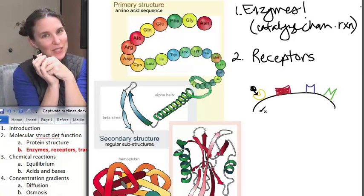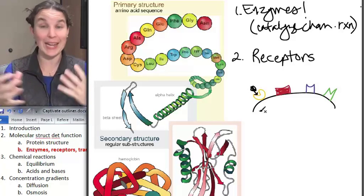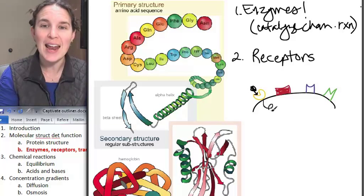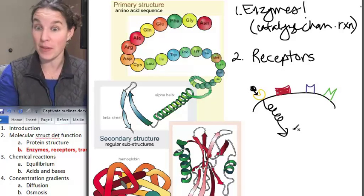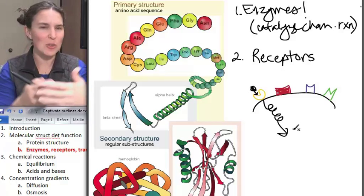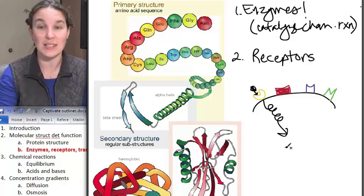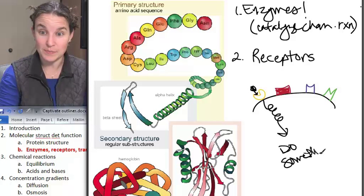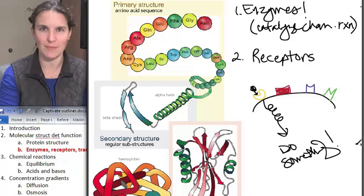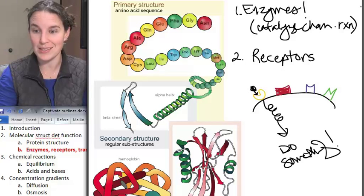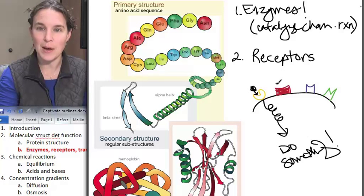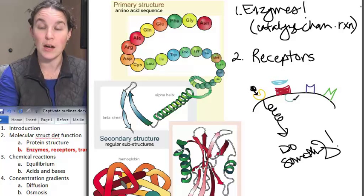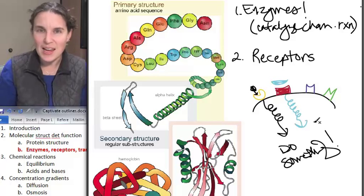When it connects to the receptor, it causes a change in the shape of the receptor. And that actually can stimulate something, some kind of chemical reaction, chemical cascade that causes something to happen. Do something. Seriously, that's really how it works. So, then here comes a different molecule that binds with this one. Look at that molecule, totally different. And it causes a different something to happen.